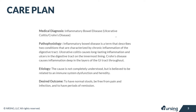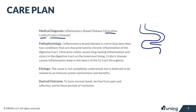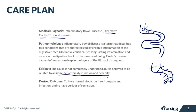Our medical diagnosis is inflammatory bowel disease, covering both ulcerative colitis and Crohn's disease. Inflammatory bowel disease is a term that describes two conditions characterized by inflammation in the GI tract. Ulcerative colitis causes long-lasting inflammation and ulcers on the innermost lining of the digestive tract, while Crohn's disease causes inflammation deep within those layers and throughout the entire GI tract. The cause is not completely understood, but it's believed to be an immune system dysfunction and also hereditary.